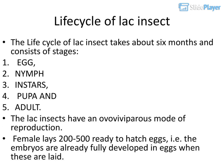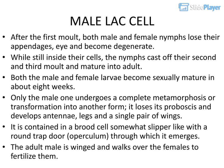The life cycle of the LAK insect takes about 6 months and consists of stages: Egg, Nymph, Instars, Pupa, and Adult. The LAK insects have an ovoviviparous mode of reproduction. The female lays 200 to 500 ready-to-hatch eggs — the embryos are already fully developed when these are laid. After the first moult, both male and female nymphs lose their appendages and become degenerate. While still inside their cells, the nymphs cast off their second and third moults and mature into adults.